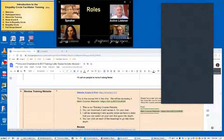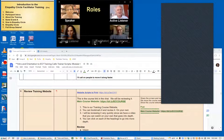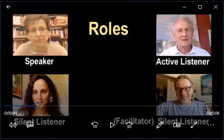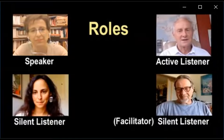An empathy circle starts with two to seven participants — four is an ideal number. There are four basic roles that rotate among participants: the speaker is the first person to speak; the active listener actively listens to the speaker; the silent listeners quietly observe and witness; and the facilitator organizes, schedules, and hosts the circle, does timekeeping, and helps keep participants in the process. Everyone has the responsibility to hold the process.